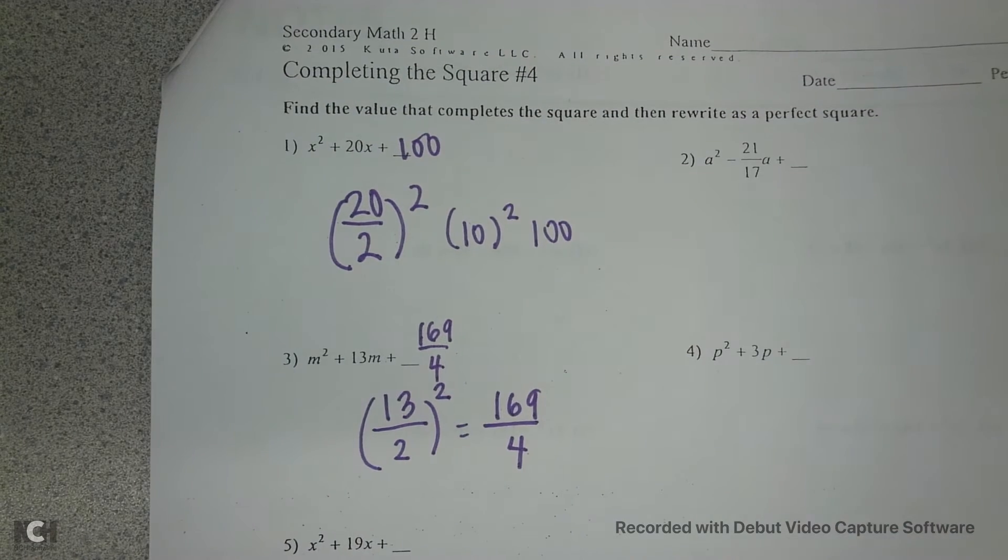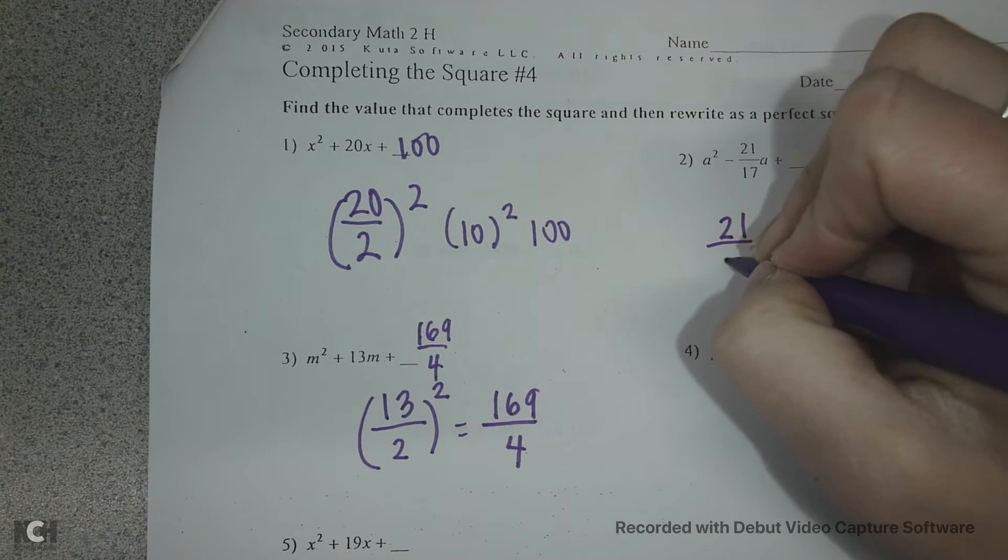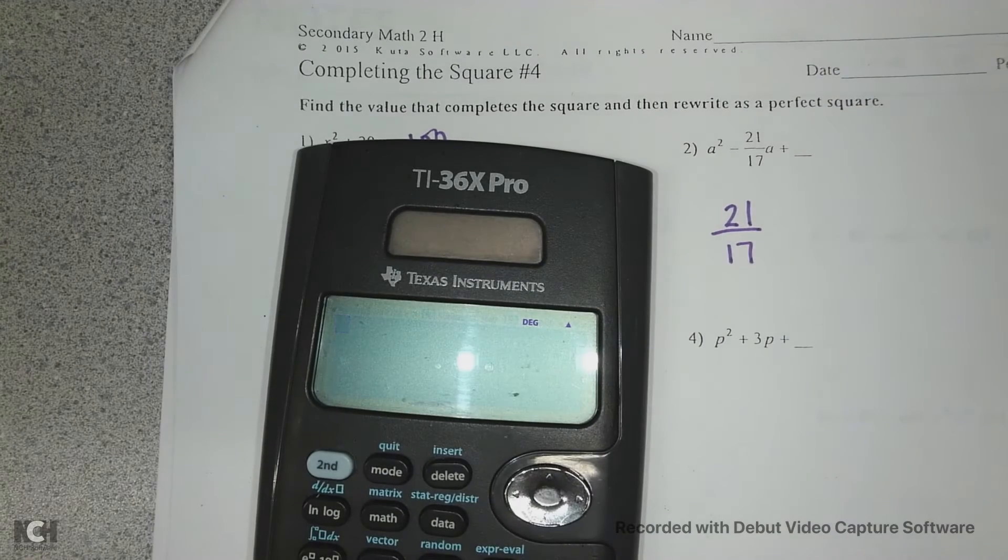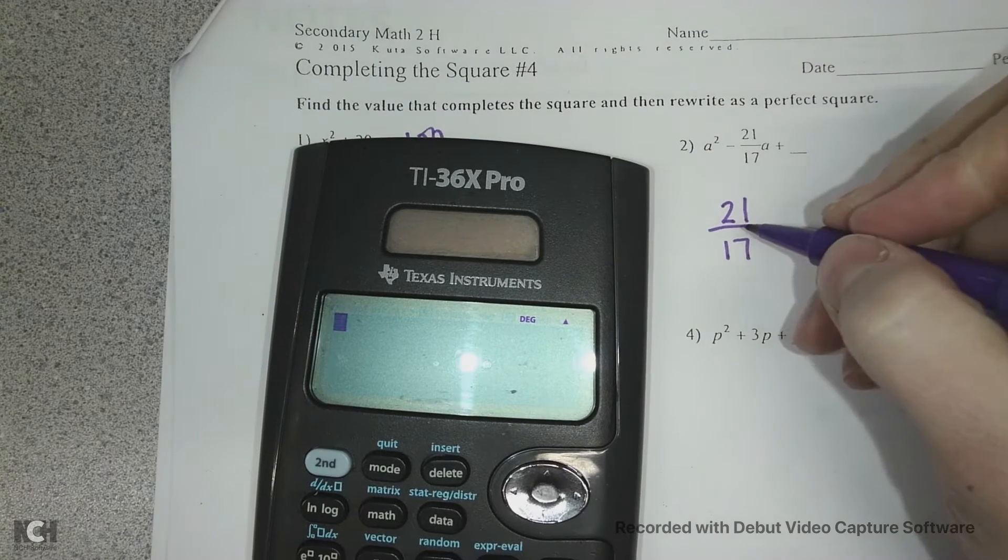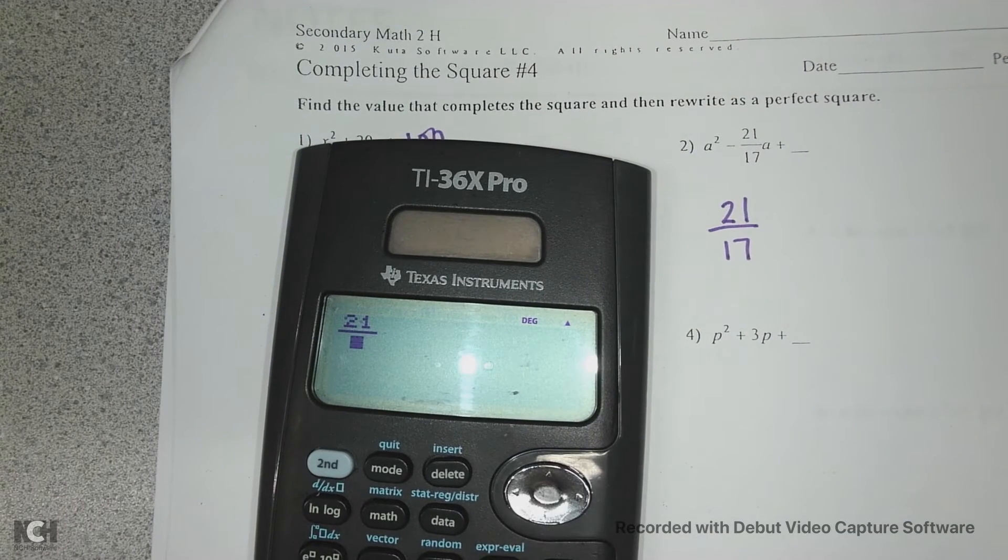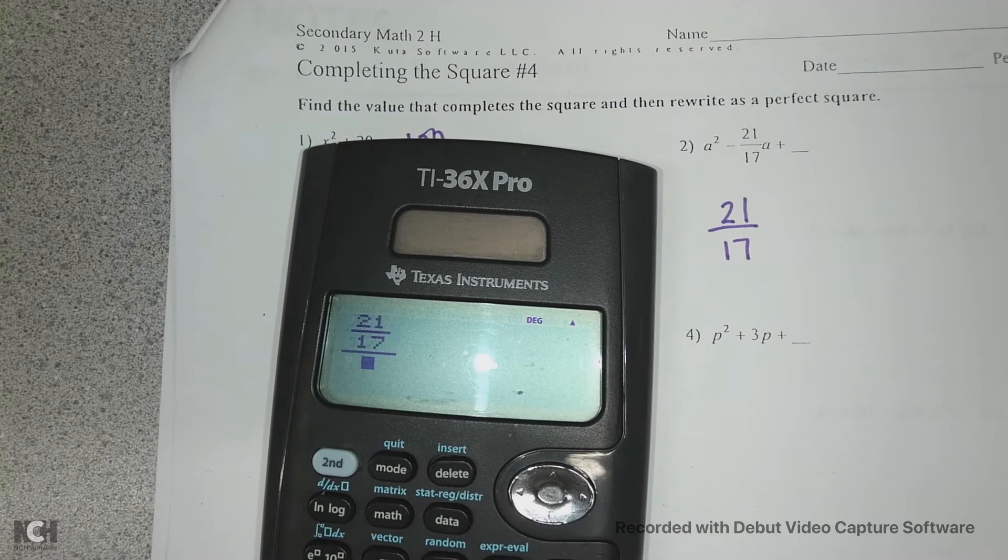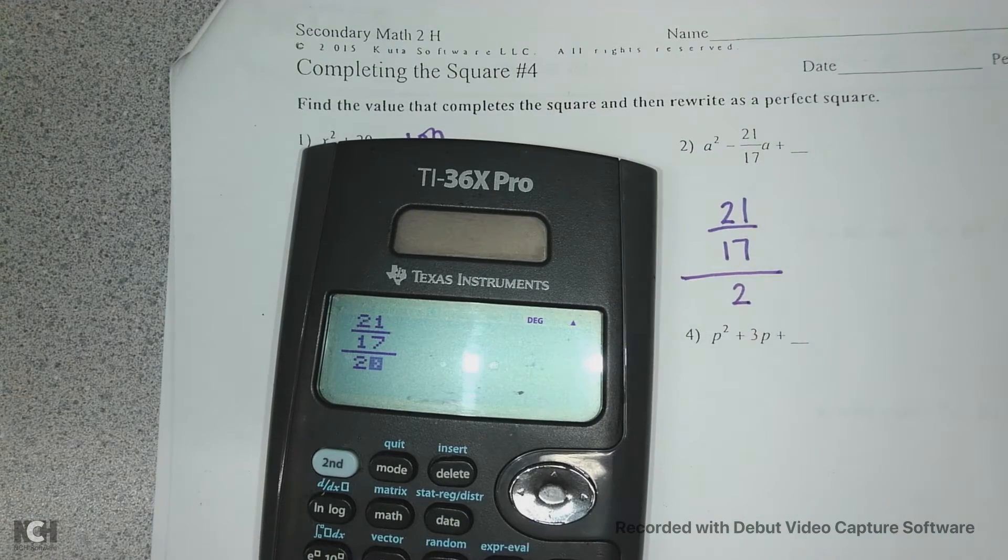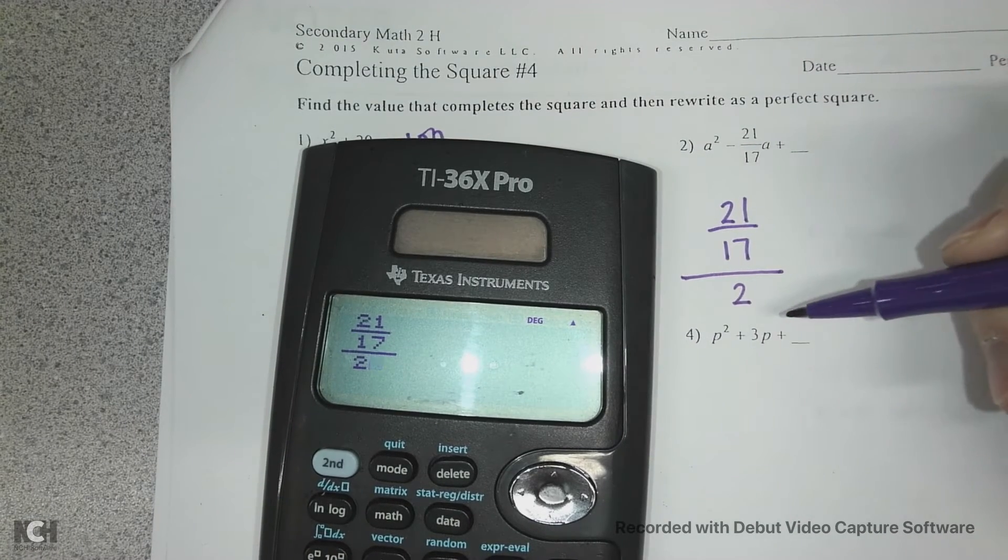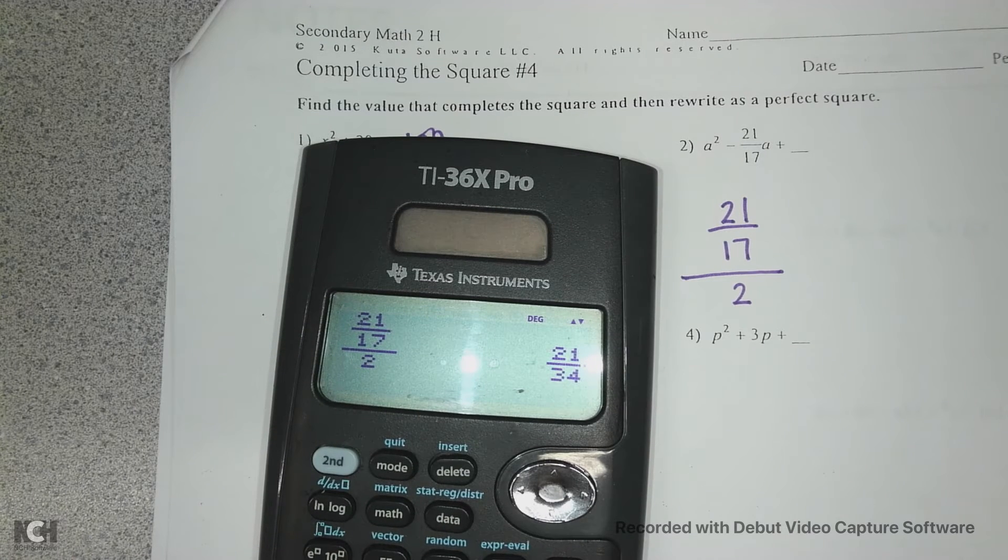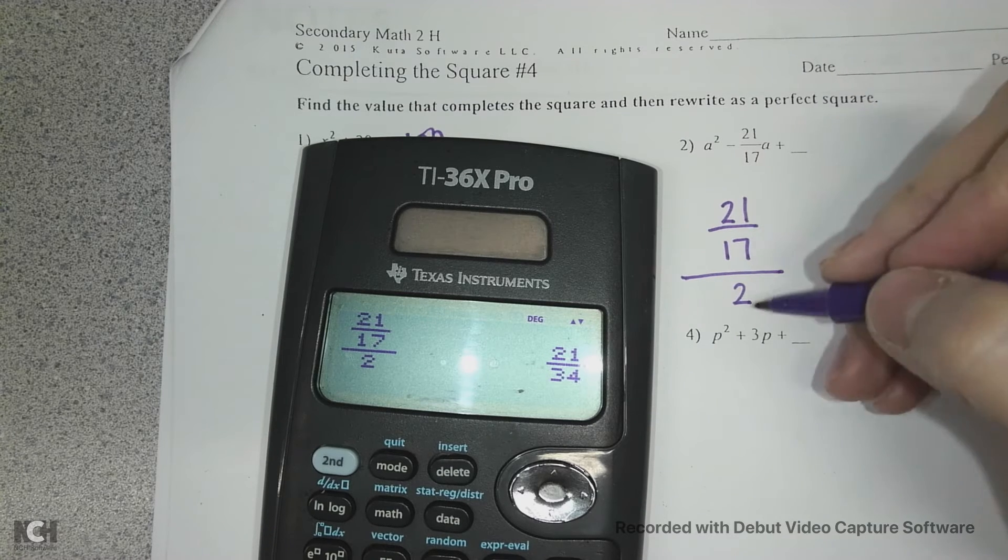Now, number 2, I put on the quiz, but it's kind of tricky. So you have to remember fraction rules because your calculator won't do this fraction for you. And I'll show it to you. So on this one, we're technically doing 21 divided by 17, and then that divided by 2. Well, you can't have a fraction within a fraction. So if we do this, we get, oh, it did it. Didn't do it last time.